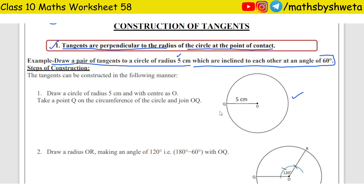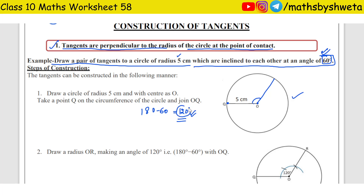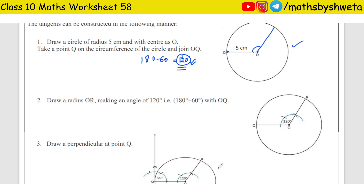Draw a circle, put the center O, and you have to create an angle. The angle between the tangents is 60 degrees, so the angle at the center must be 180 minus 60, which gives 120 degrees. So the second step is: draw a radius of the circle making a 120-degree angle at center O. So this angle will be made of 120 degrees. Remember — 120 comes from 180 minus 60. Now it is easy to make with a compass.